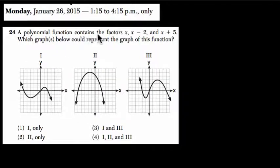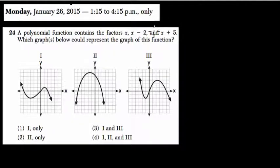Okay, so they tell us the polynomial function contains the factors x, x minus 2, and x plus 5. Which graphs below could represent the graph of this function?